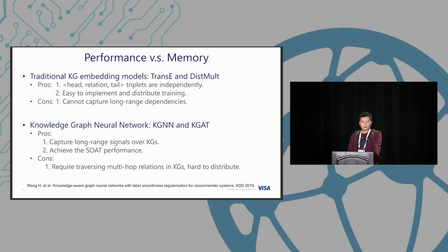Knowledge graph neural networks like KGNN and KGAT are very powerful for capturing long range signals and can achieve state-of-the-art performance. But there's also a disadvantage: they need to traverse multi-hop relationships in the knowledge graph, which is very hard to distribute because the graph is not IID data. We cannot simply distribute this graph independently; we need to consider the relationships.